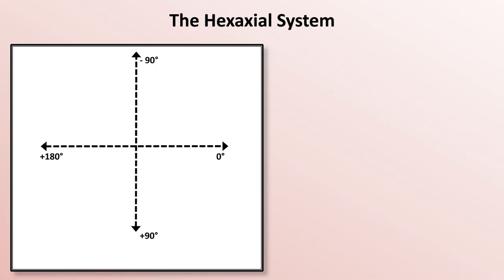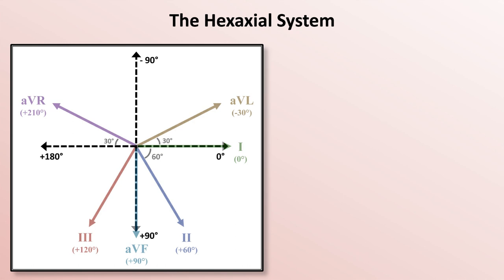Now superimpose the directions of those six limb leads. This is the hexaxial system. Let me give a simple demonstration as to how the hexaxial system allows us to understand the patterns of electrical signals in the heart.